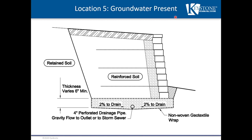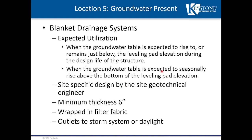For groundwater, a blanket drain is used when the water table is within two-thirds of the wall height or within three feet of the base — measured from the top of the leveling pad. Free-draining aggregate wrapped in geotextile fabric with a drain pipe is installed to remove water before it rises into the retaining wall zone. This applies when the groundwater table is expected to rise to or remain just below the leveling pad elevation during the structure's design life, or where seasonal fluctuation occurs. Blanket drains are a minimum of six inches thick and should outlet to a storm system or to daylight.